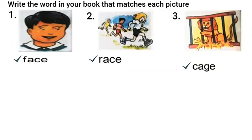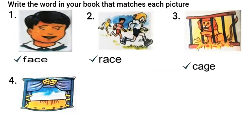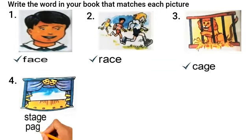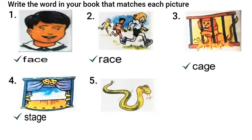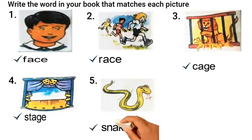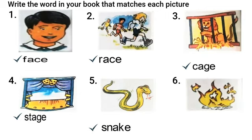After that, picture four. Two words are given here: stage and page. I think you can see, right? Yes, it is a picture of a stage. Then number five — what can you say about this picture? Alright, you can easily say that it is a snake.